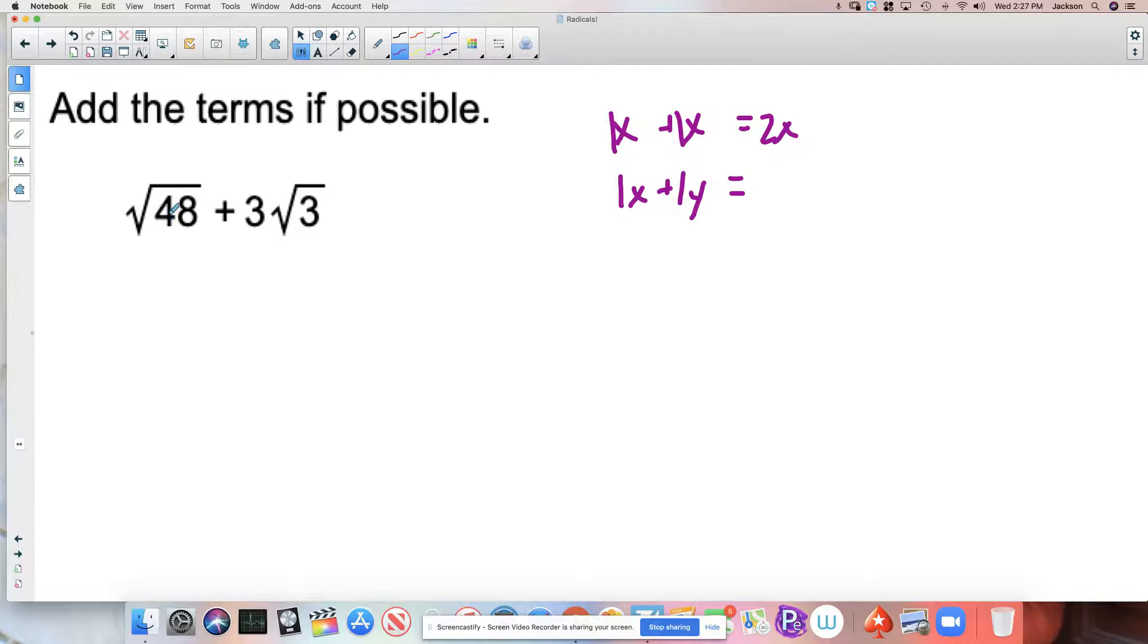Okay, and again, the product rule, the quotient rule, they all depend on your, for lack of a better word, memorization and recognition of perfect square factors. So 48 does have a perfect square factor.